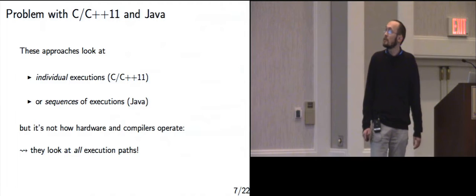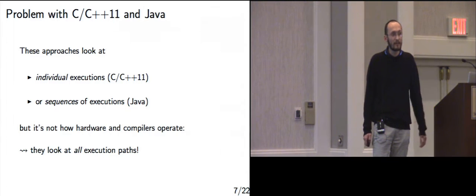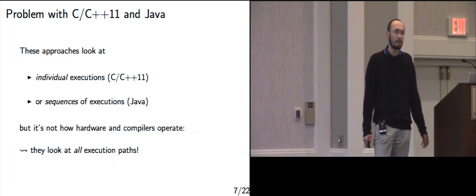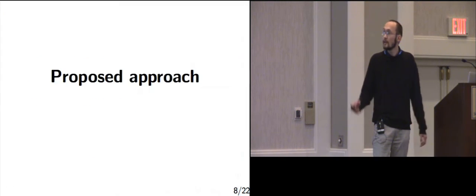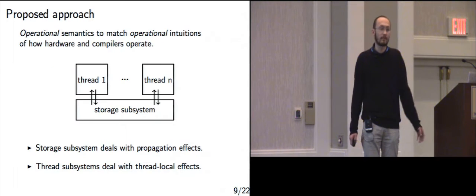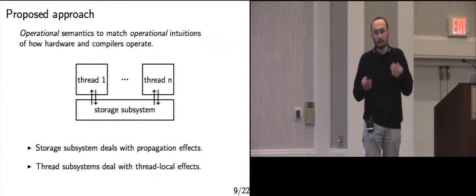What seems wrong with these approaches? C looks at executions individually and clearly can't distinguish the cases, and Java looks at sequences of partial executions. But that's not how hardware and compilers operate — they don't build sequences of executions or look at executions individually. What they do is look at all execution paths. So what we're going to do is exactly that: an operational semantics that tries to match the operational intuitions about how hardware and compilers operate. Like the previous talk, we split the problem in two: a storage subsystem dealing with propagation effects between threads, and thread subsystems dealing with thread-local effects like out-of-order issuing, merging, and so on.